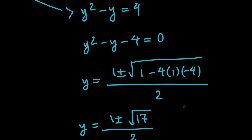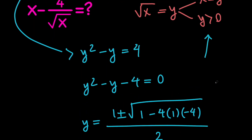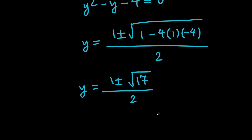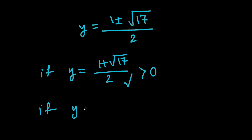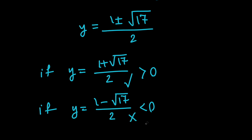Notice that we want y to be a positive quantity. So let's break these two solutions down. If y equals 1 plus root 17, all divided by 2, this is obviously a positive quantity and therefore a valid solution. But if y equals 1 minus root 17, all divided by 2, this is going to be a negative value because root 17 is greater than 1, and therefore this is not a valid solution. So we only have one valid value for y: 1 plus root 17, all divided by 2.